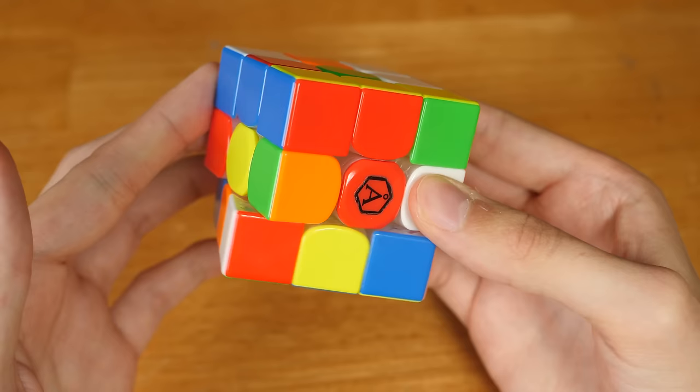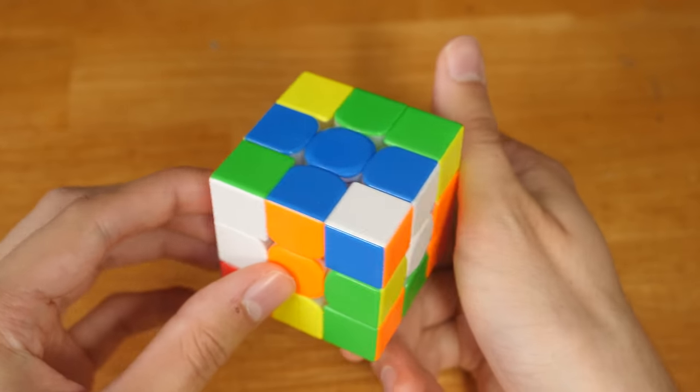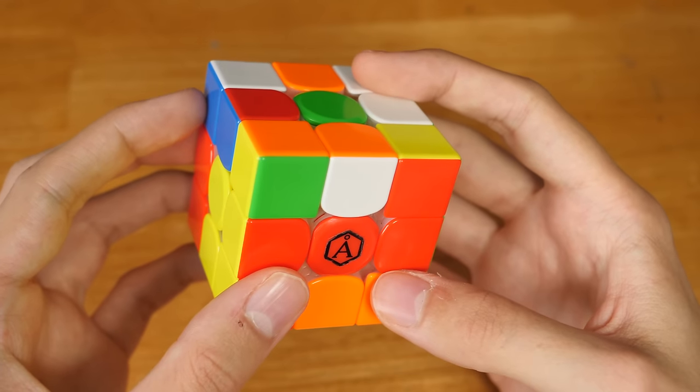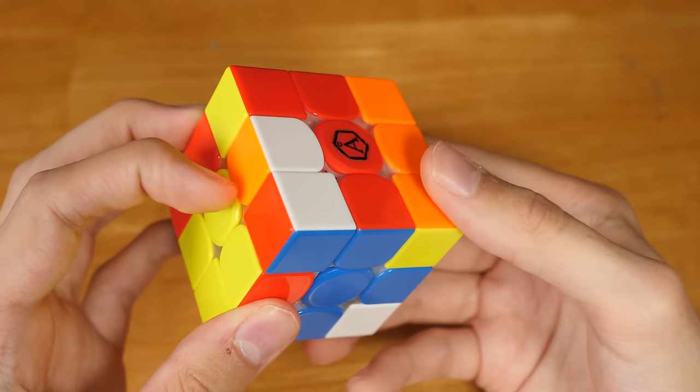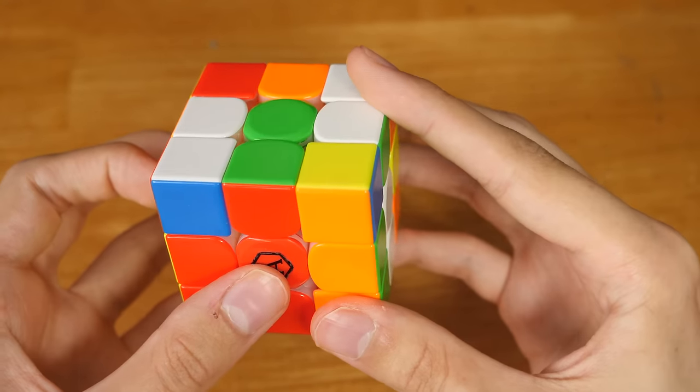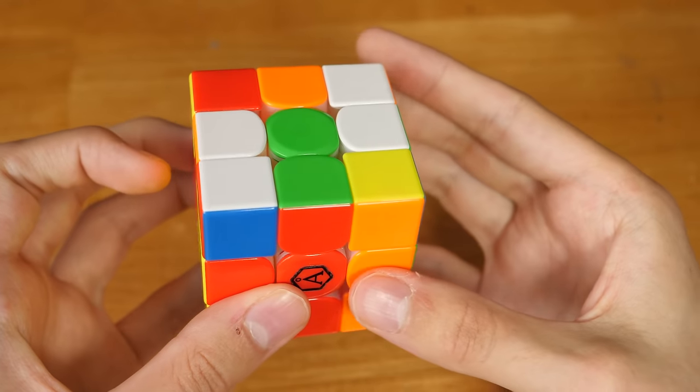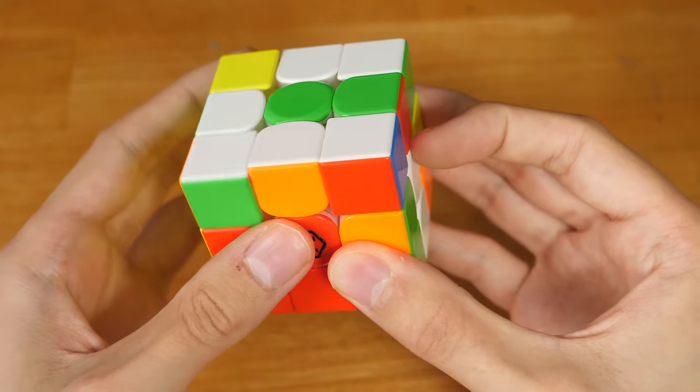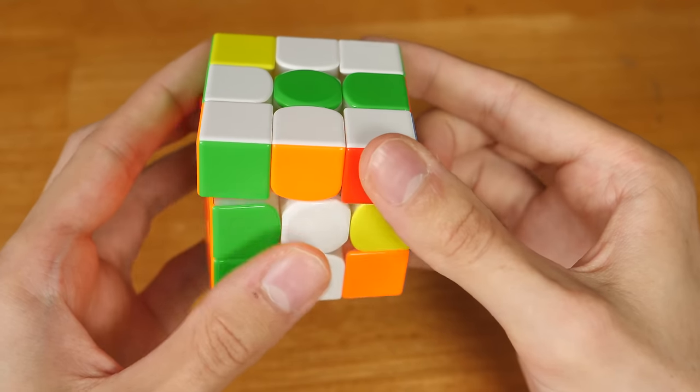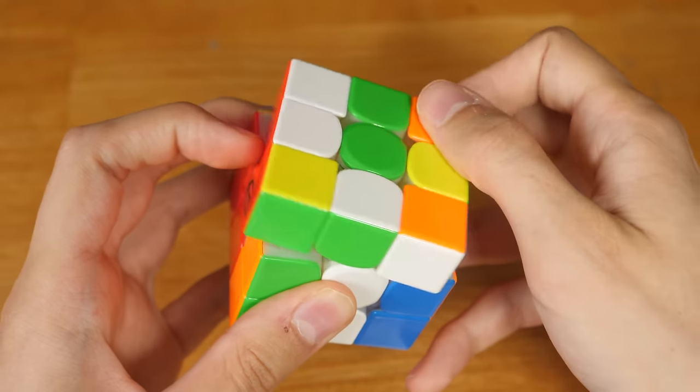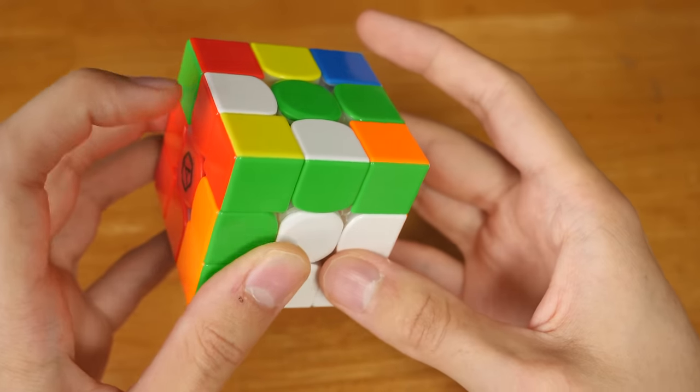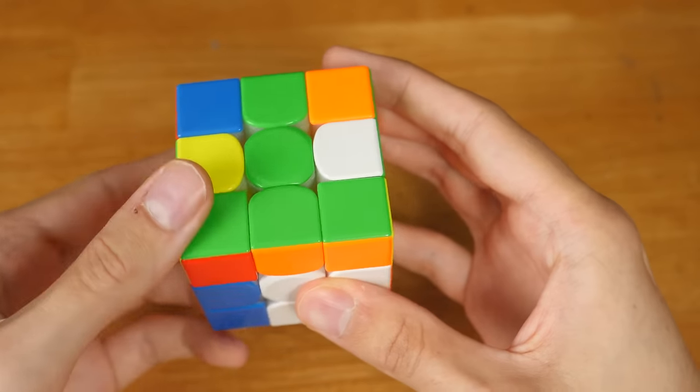So we'll start by aligning the D-layer, solving those first three cross pieces, then inserting this free pair and inserting the final cross edge, solving the X-cross and setting up the second pair to solve in the back. And here's the edge that goes with that corner that we tracked. So inserting these two.